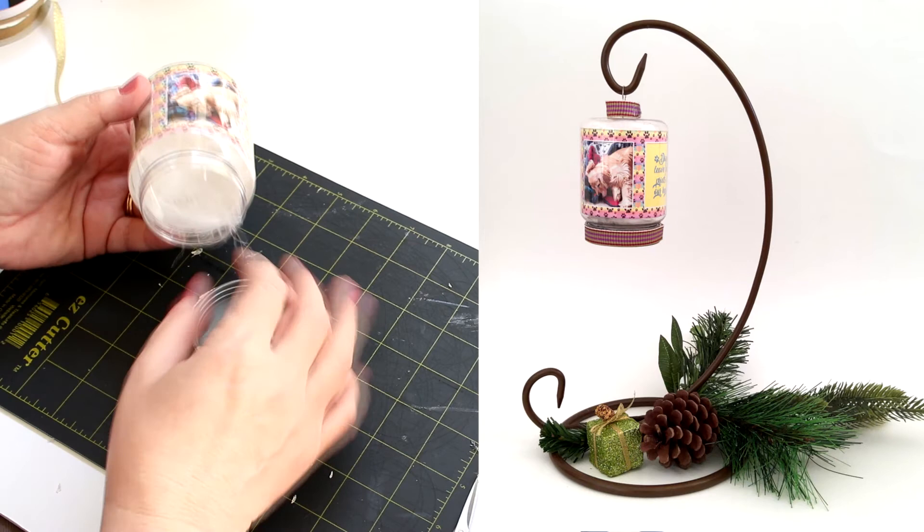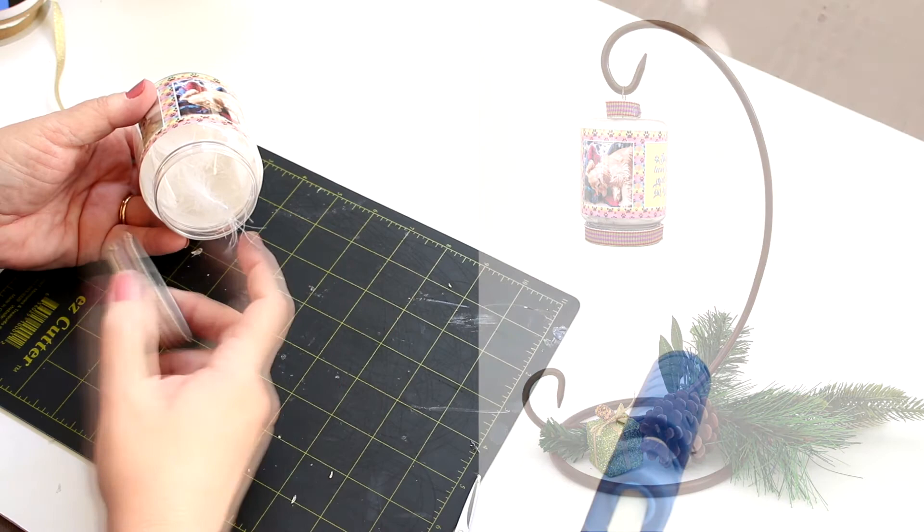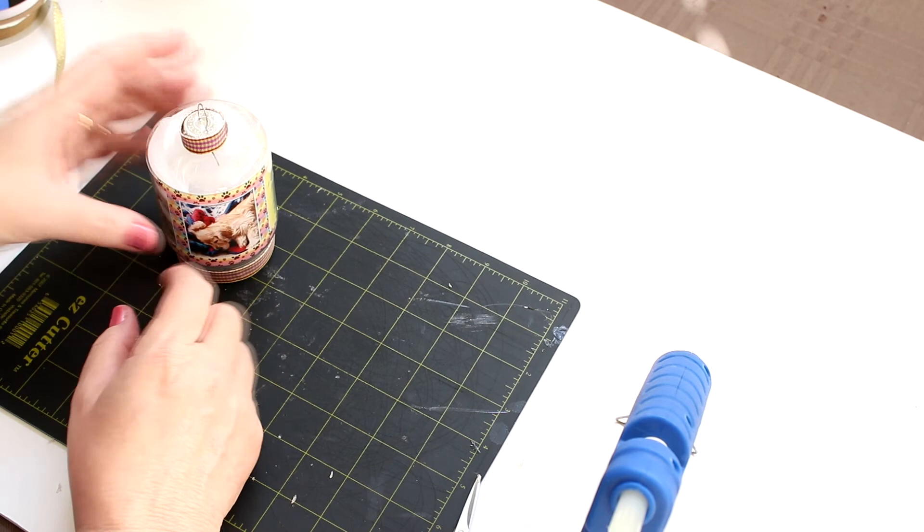So what I did was I just put some feathers in there. Now you can buy bags of feathers. What I did was I was at the Dollar Tree and I bought one of the feather boas and I just plucked off the feathers and used that to fill up this space.